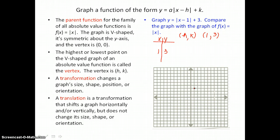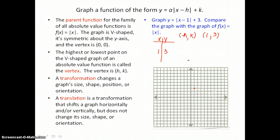This v-shape is going to open up because our a value is positive 1. When our a value is positive, the v-shape opens up on the coordinate plane. If our a value were negative, the v-shape would open downward. Now I need to know how wide to graph this v-shape, so I'm going to choose values for x on either side of the vertex — I'm going to choose negative 1 and positive 3.